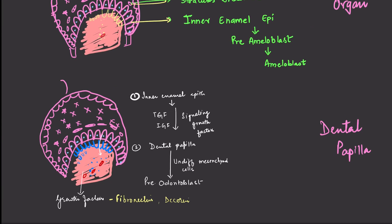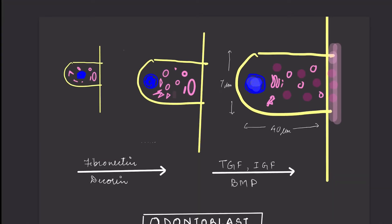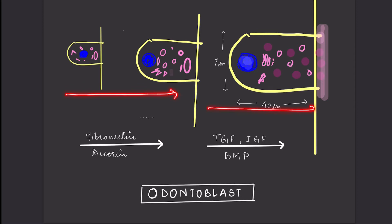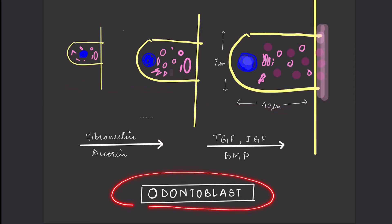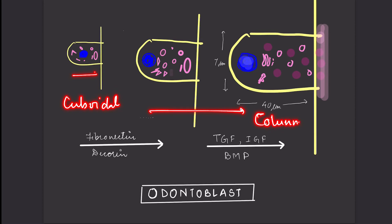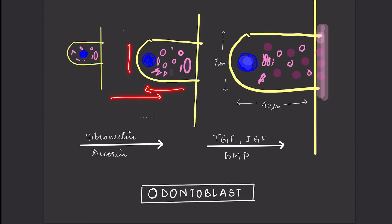As the pre-odontoblast matures into a complete mature odontoblast, the cell size increases. The pre-odontoblast starts as a small cuboidal cell and turns into a tall columnar cell upon complete differentiation. The first change is an increase in height and width. Cell organelles, initially scattered around the nucleus, migrate — the nucleus moves to the apex while the cell organelles move to the base.